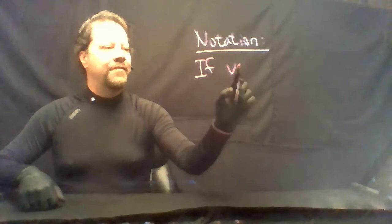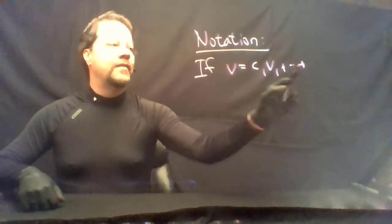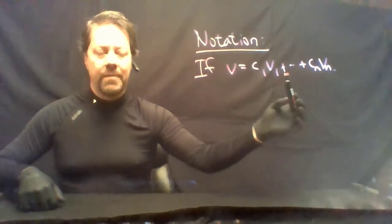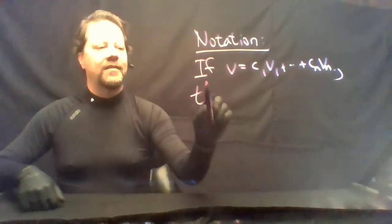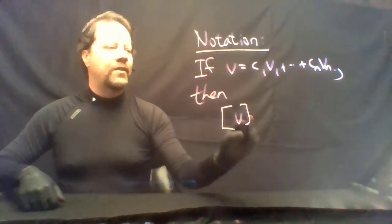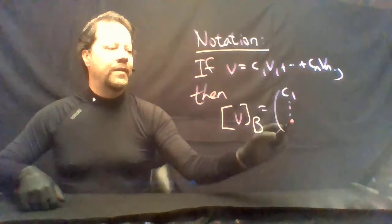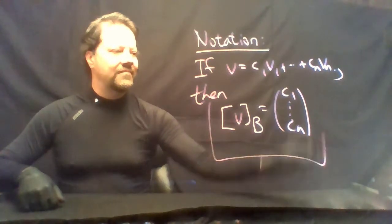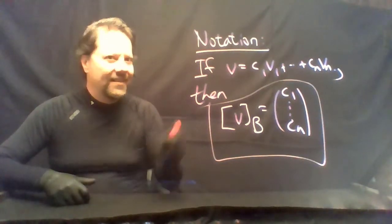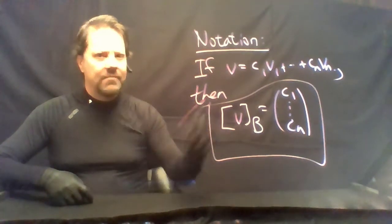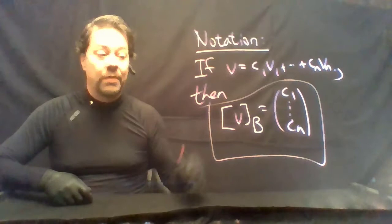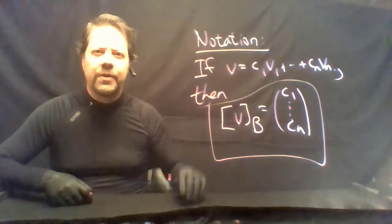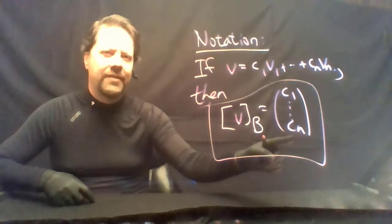In defining this notion of coordinates, we need a notation. If v = c1·v1 + ... + cn·vn for some ordered basis v1 through vn, then the coordinates of v relative to B are (c1, ..., cn). These v's could come from any kind of vector space — it could be polynomials, for all we know. We've just reduced the study of polynomials to vectors in Rⁿ.